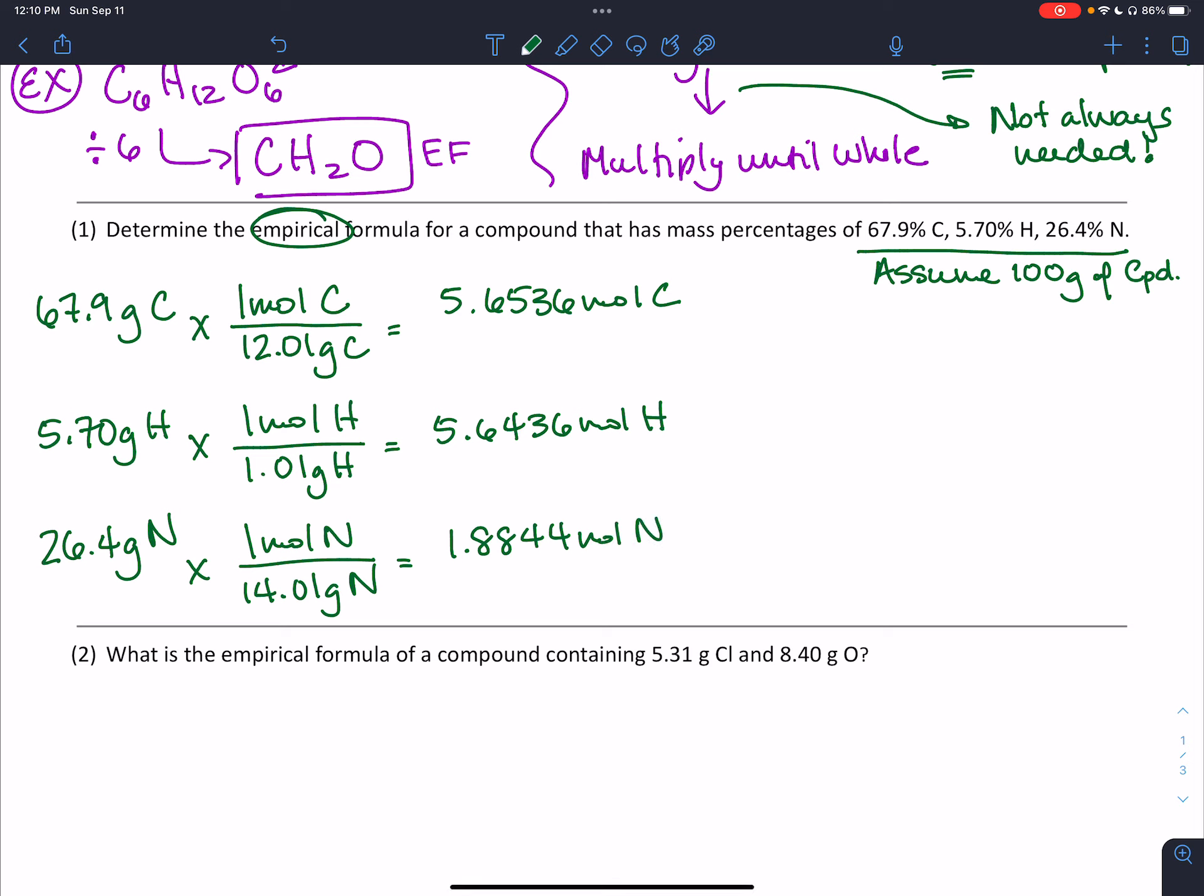We did percent to mass, now mass to moles. Next, divide by smallest. Nitrogen is the smallest at 1.8844. I divide all three values by 1.8844, which gives 1 for nitrogen. If we chose one of the larger values, nitrogen would be less than 1, and we can't have less than 1 atom. For carbon, dividing by 1.8844 gives 3. For hydrogen, dividing by 1.8844 also gives 3. Three whole numbers, so no need to multiply until whole.